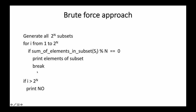Let's look at the brute force approach to solve this question. The brute force approach is quite simple: we generate all 2^n subsets and iterate from 1 to 2^n. If the sum of elements in the i-th subset is divisible by n — that is, sum of elements in subset S_i mod n equals 0 — we print the elements of that subset and simply break.